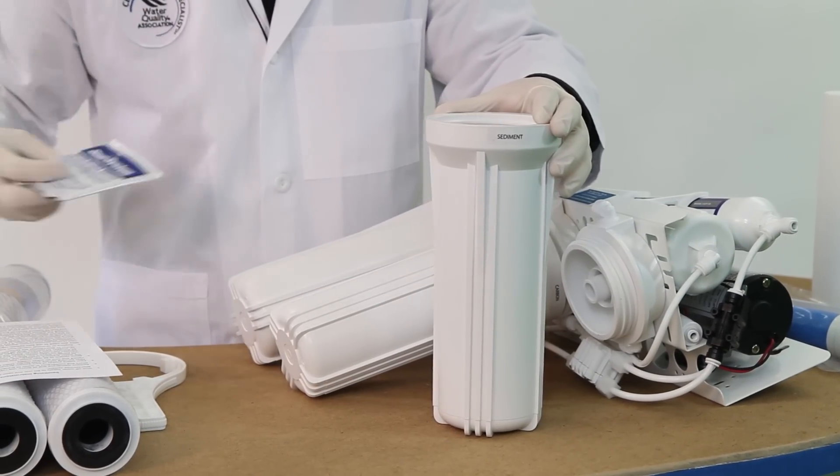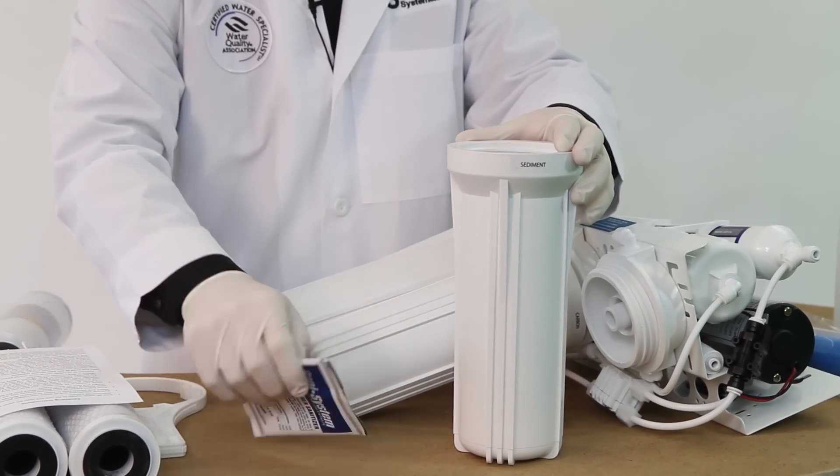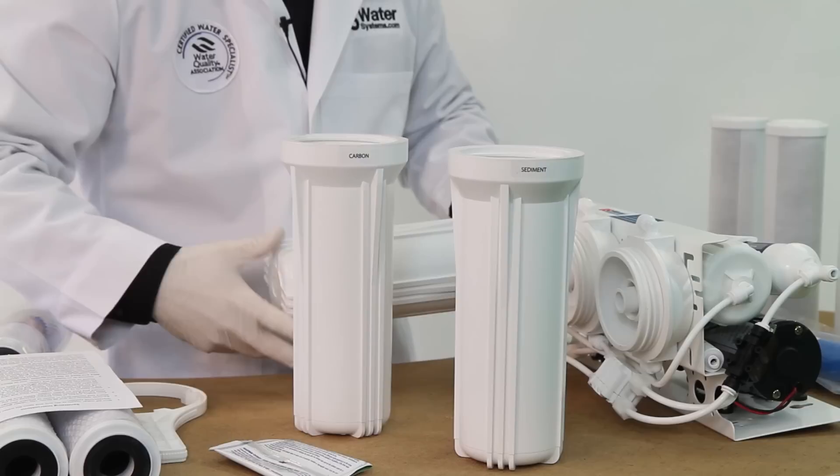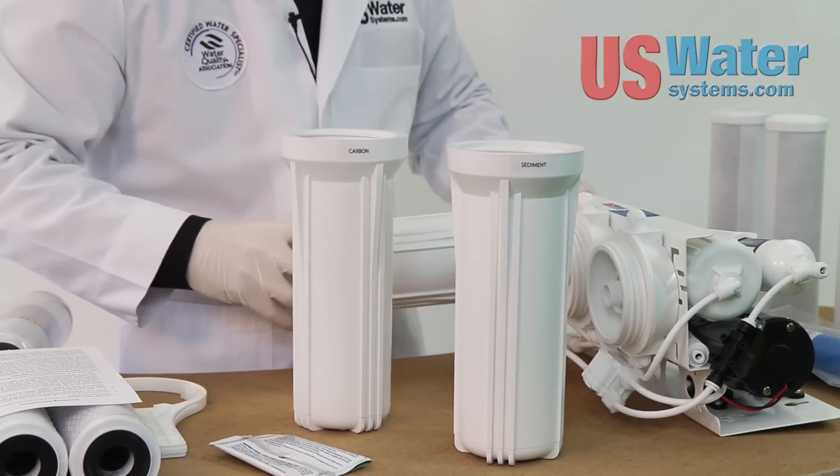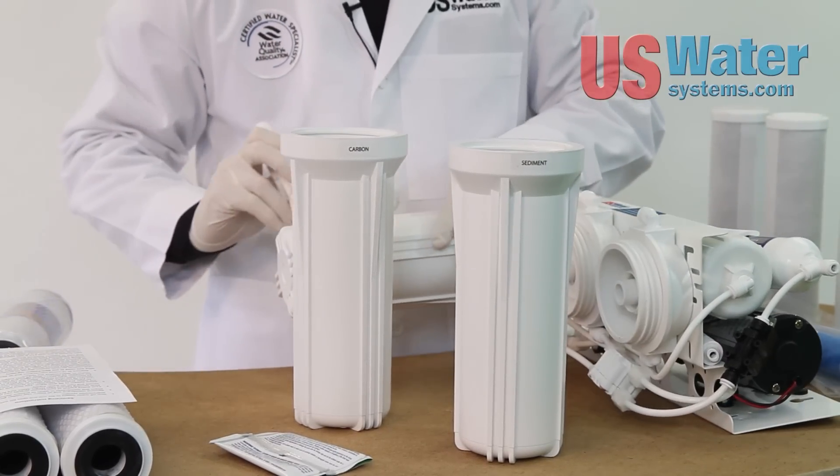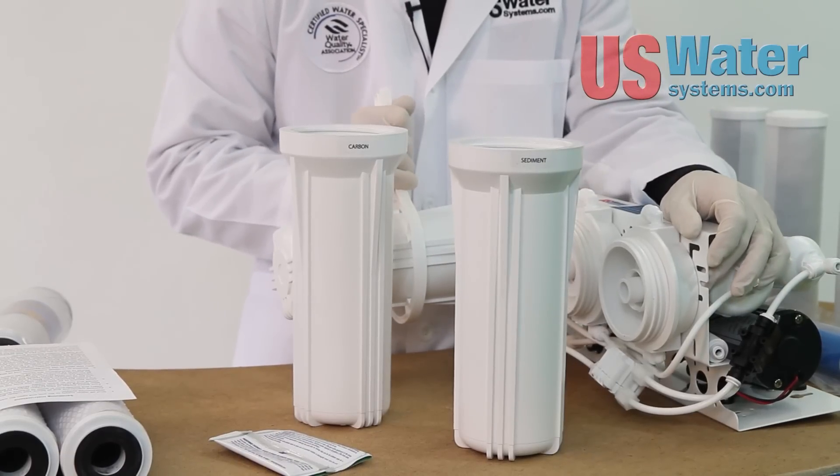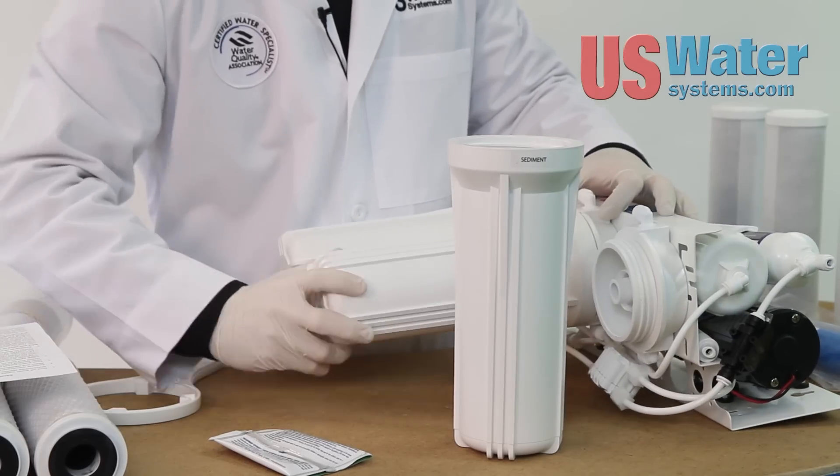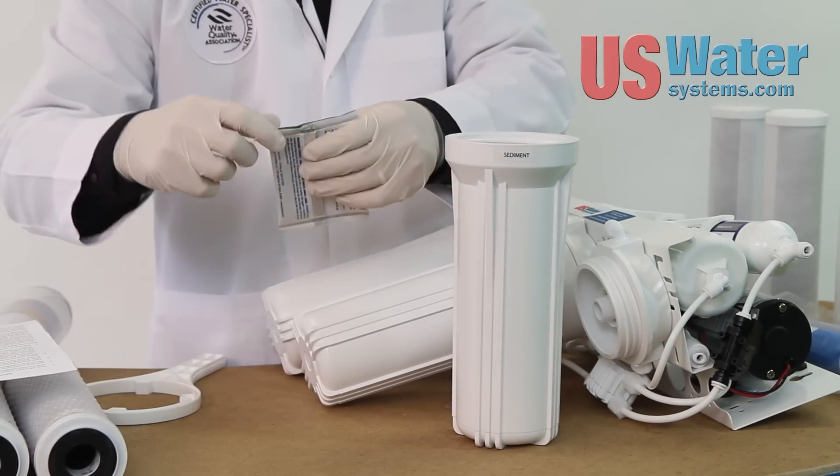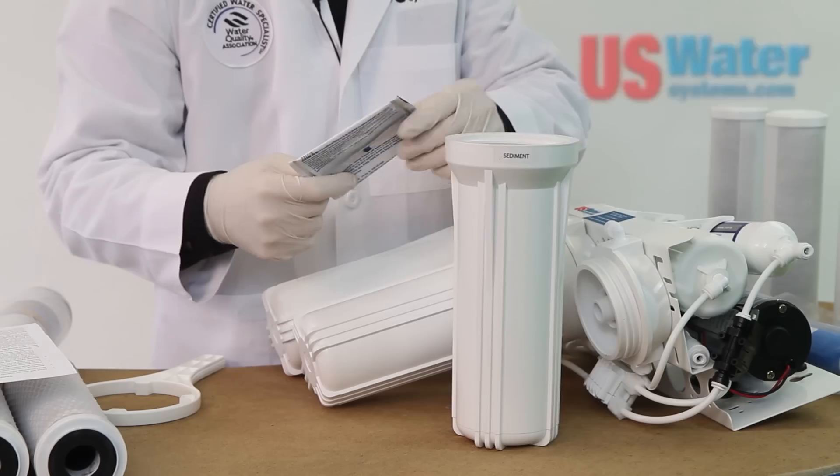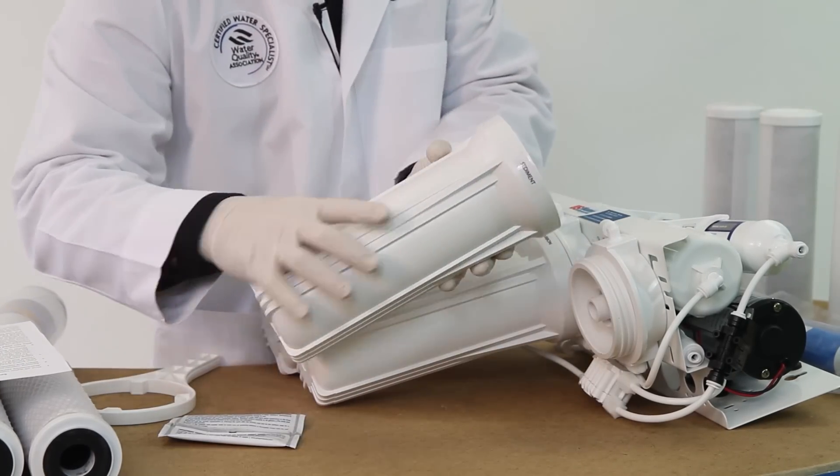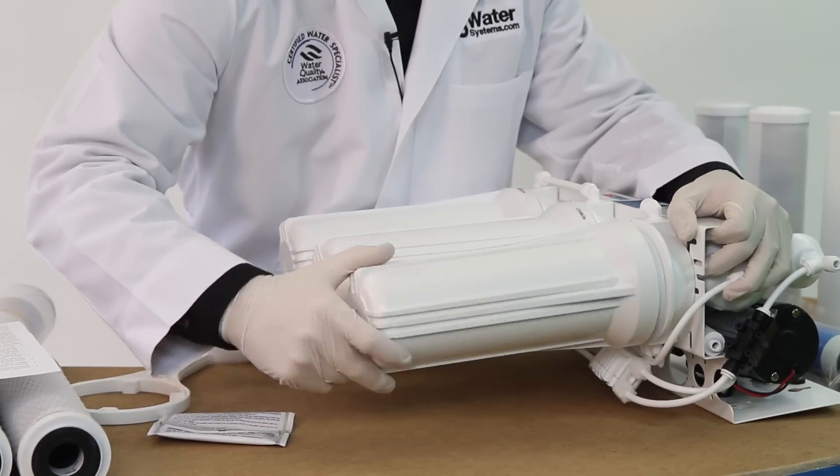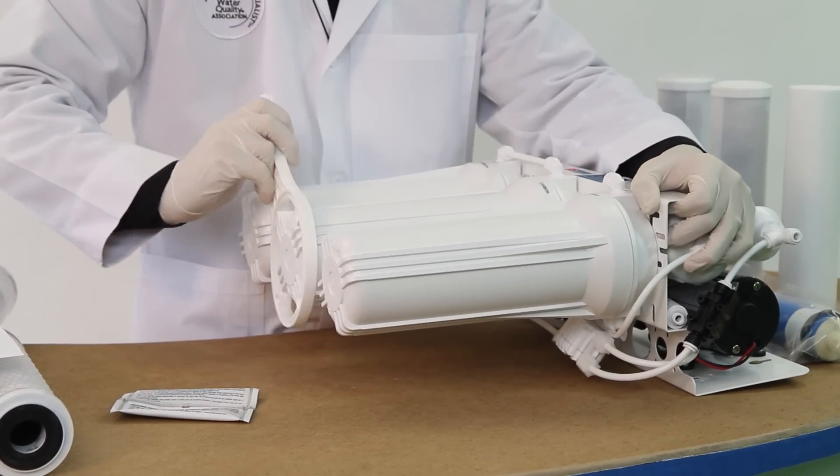You're going to screw these all on hand tight and give a slight, as much as maybe only an eighth of a turn, just a slight turn to snug them up. You're going to tear your sanitation packet open, pour the entire contents in sump number one, which is the sediment. You're going to make sure these are tight.